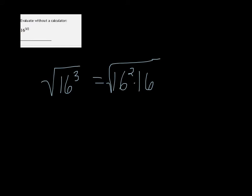Well, the square root of 16 squared is just 16, so I can take that out. And then the square root of 16 is 4, so I end up with 16 times 4. And 16 times 4 is 64.